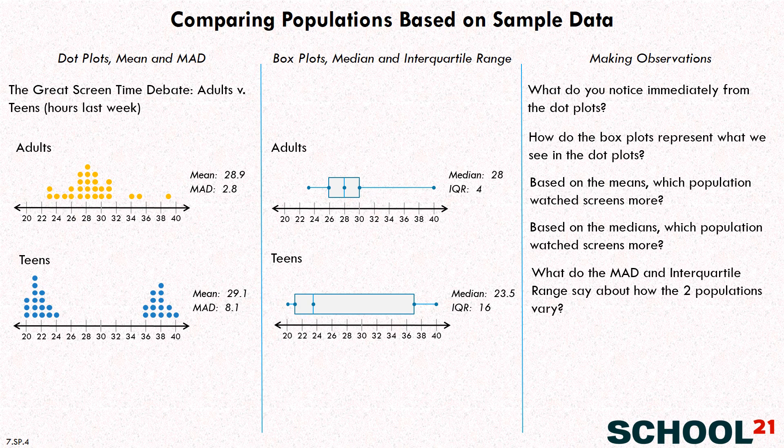What do the MAD and the interquartile range say about the two populations, how those two populations vary? Well, the MAD, the mean absolute deviation, that's a measure, just like interquartile range, of how spread out the data are. And you can see for adults, it's 2.8. For teens, it's much greater because they're much more spread out. So what that is telling you is that teens vary a lot more. Same with the interquartile range. For adults, it's only four. But for teens, it's 16. That's much, much greater. So instead of just making conclusions based on the mean or the median, we also have to ask ourselves how the data are varying. And that will give us a more complete picture.